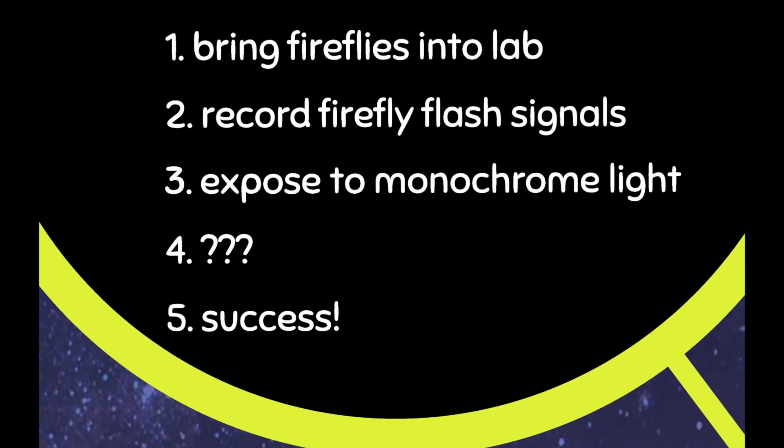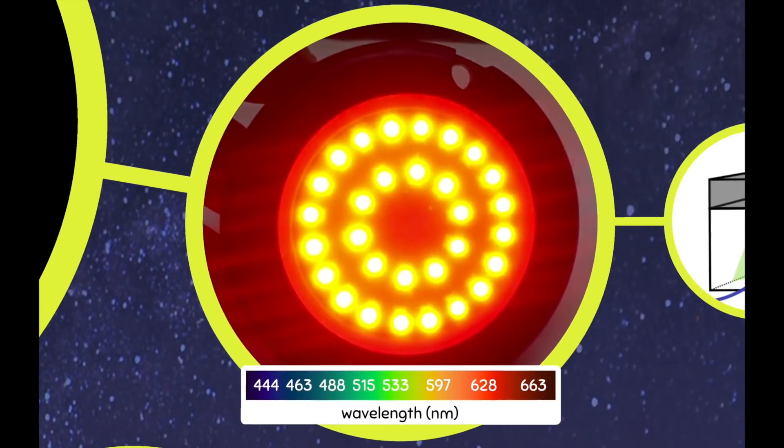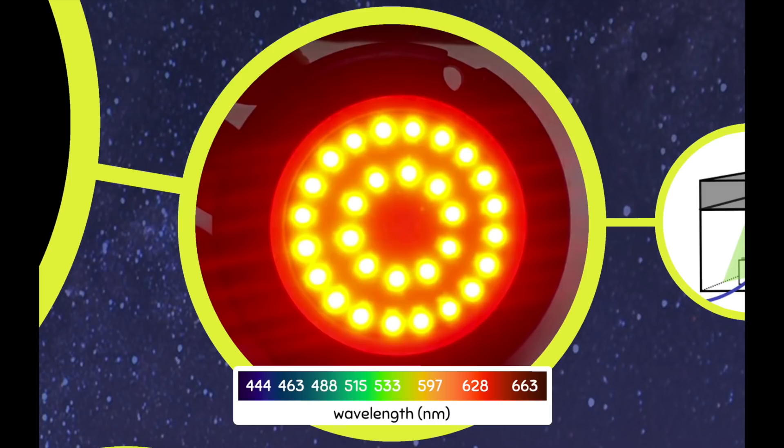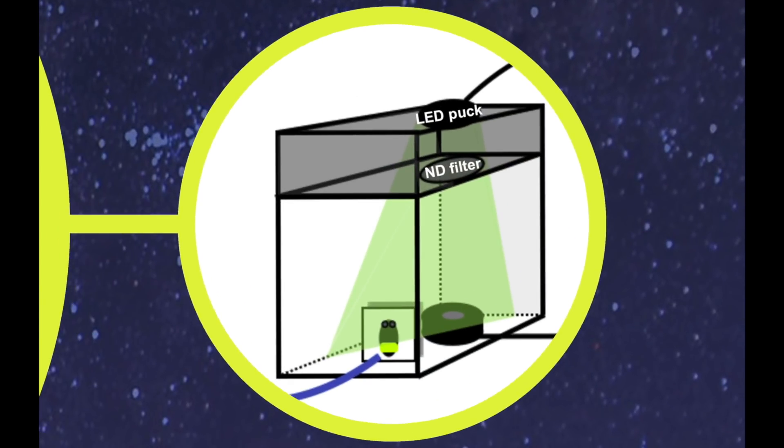Now, we've got the flash signals recording. Time to expose these guys to some monochromatic light. So we ordered eight special custom made LED pucks with these colors going all the way from violet to deep, deep red. And we set them up in this second firefly contraption. The details here are not all that important, but you should know that the light at the top shines down. We can adjust the brightness using this neutral density filter. And the light goes into this box and illuminates the entire box. So by changing the light, we can change the ambient illumination and record what the firefly does while we're changing it.